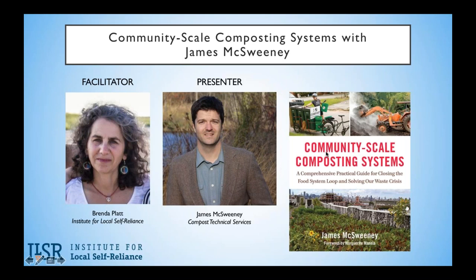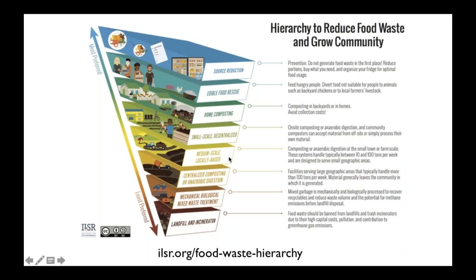We focus on supporting a distributed and diverse infrastructure for composting. Our hierarchy — the first we believe to be developed with this lens of small scale and keeping materials local within local economies — starts with reducing waste, rescuing edible food to feed people or animals, then home composting, small scale decentralized, medium and locally based, before we get to centralized composting, mixed waste composting, landfilling, and incineration. Feel free to visit that link for more.